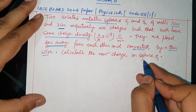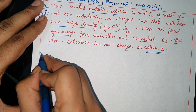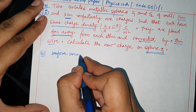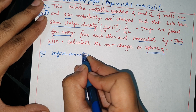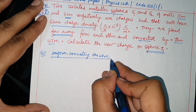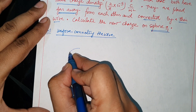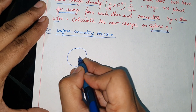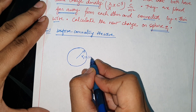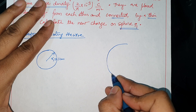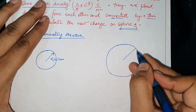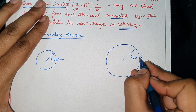Calculate the new charge on sphere S1. Solution: before connecting the wire, radius r1 is 1 cm and radius r2 is 3 cm.